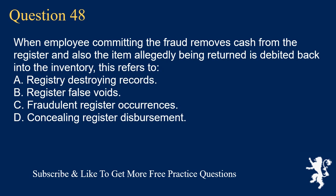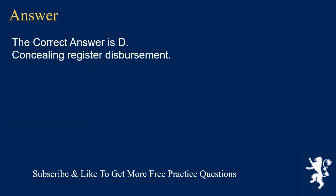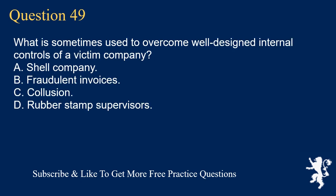Question 48: When an employee committing fraud removes cash from the register and also the item allegedly being returned is debited back into inventory, this refers to: A. Registry destroying records. B. Register false voids. C. Fraudulent register occurrences. D. Concealing register disbursement. The correct answer is D. Concealing register disbursement.